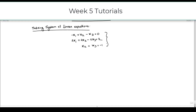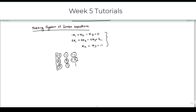We can write the corresponding matrix of the system of equations as: first row [−1, 1, −1], second row [2, 2, −2], third row [0, 1, 1]. The coefficient of x1 in the first equation is −1, x2 is +1, x3 is −1. In the second equation, coefficients of x1, x2, x3 are 2, 2, and −2. There is no x1 in the third equation so its coefficient is 0; x2 and x3 both have coefficient 1. This is the coefficient matrix.